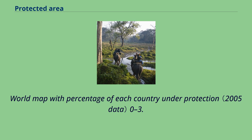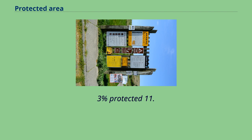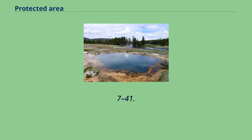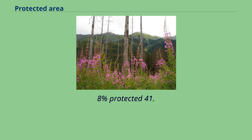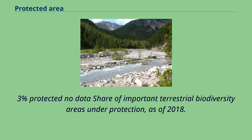World map showing the percentage of each country under protection, color-coded into ranges: 0–3.9%, 3.9–11.3%, 11.3–22.7%, 22.7–41.8%, 41.8–72.3%, and areas with no data. This represents the share of important terrestrial biodiversity areas under protection as of 2018.